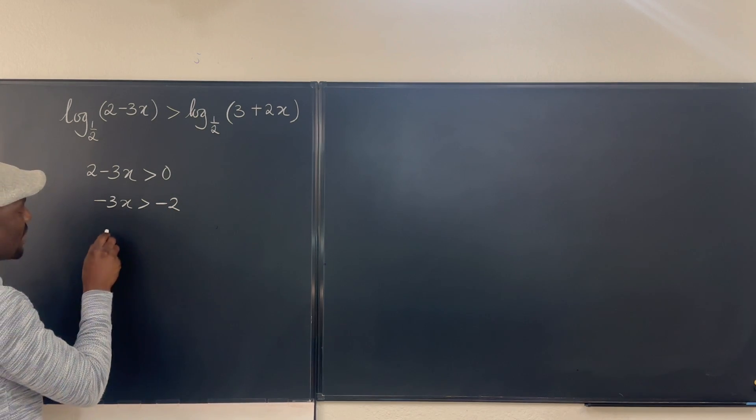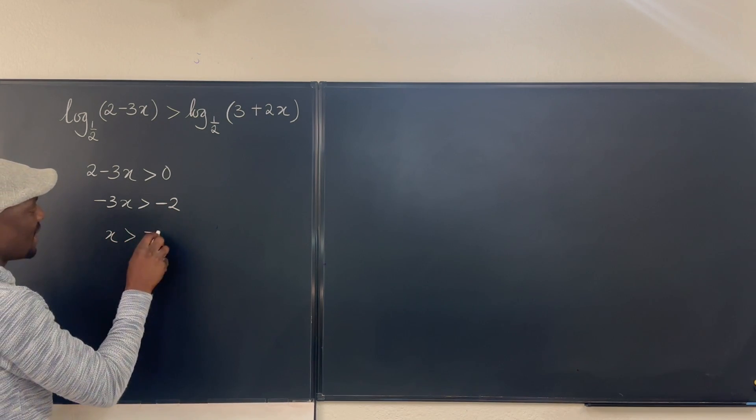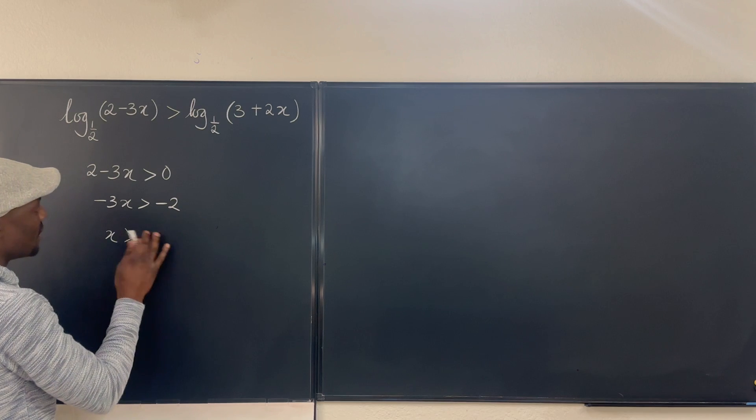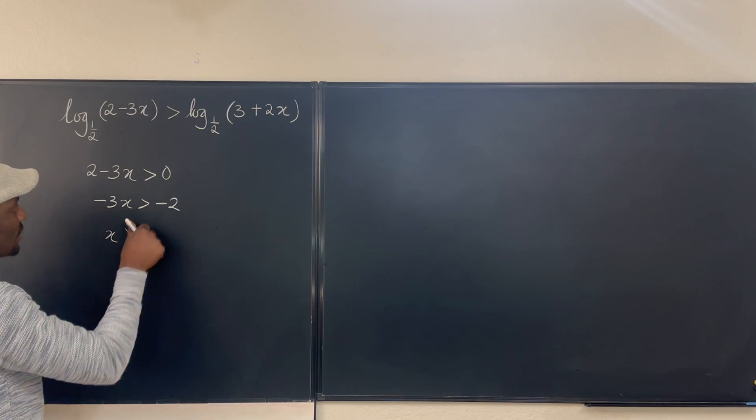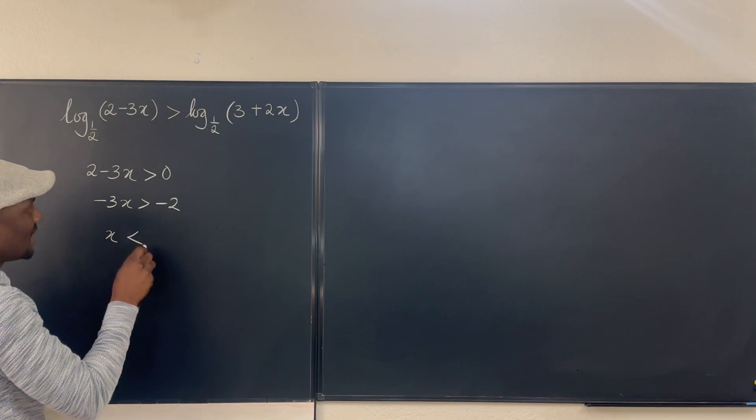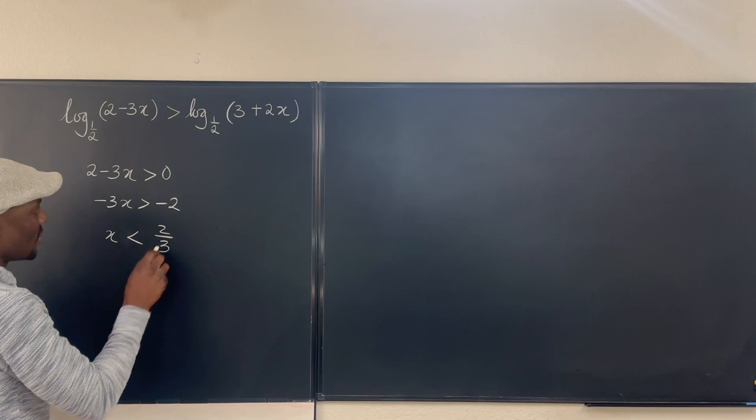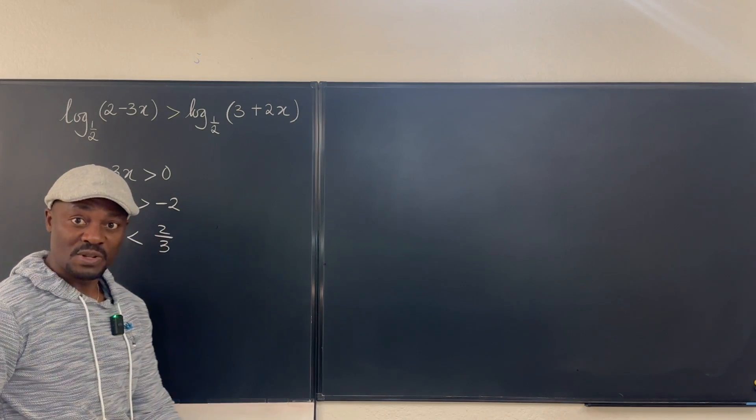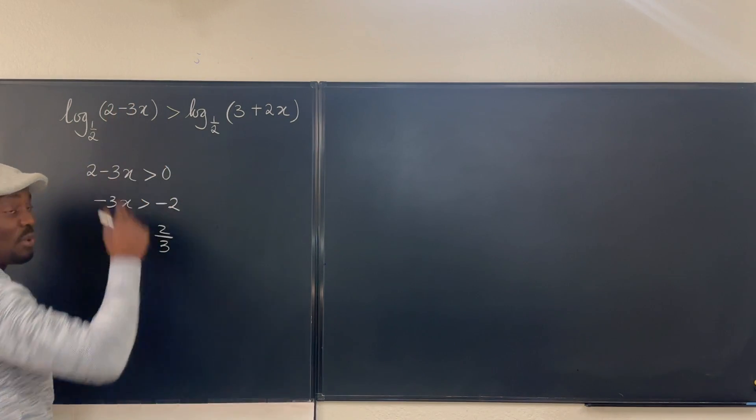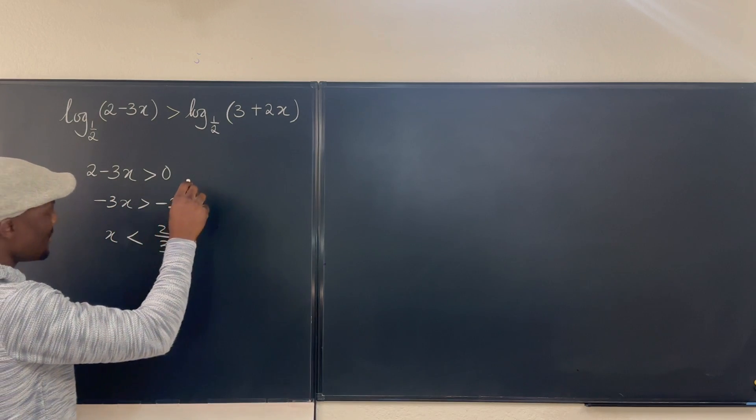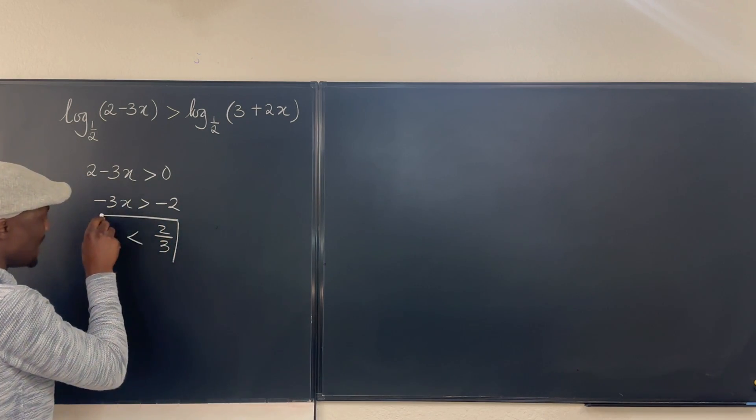If we divide both sides by negative 3, we have x is greater than negative, oh, it's going to be positive, and we have to change this sign. So x has to be less than 2/3. Okay, so this is the first solution that we have using this part. Okay, so this is important. We need this.